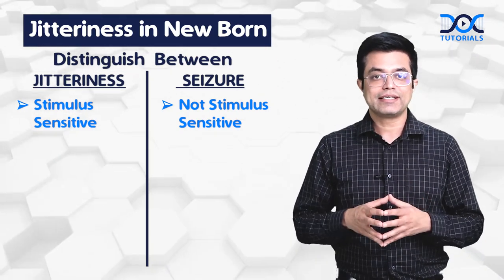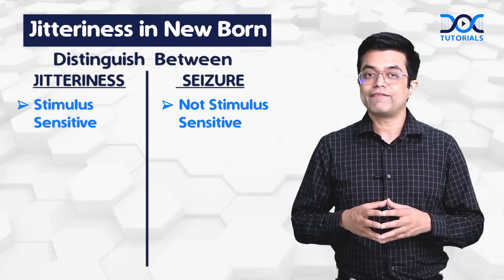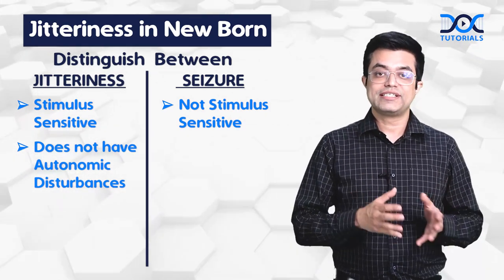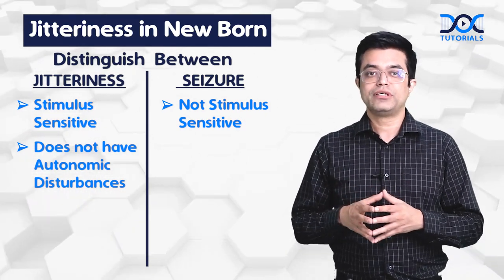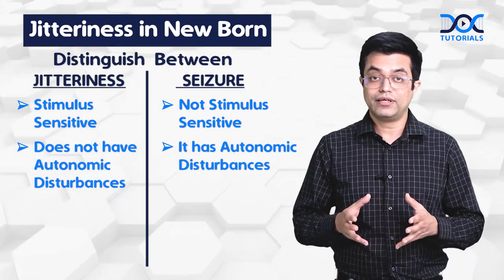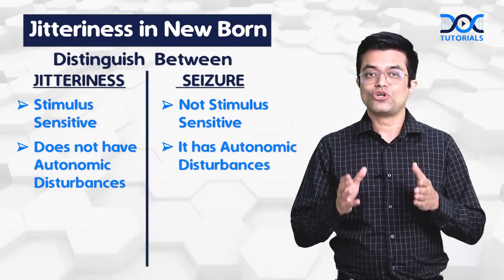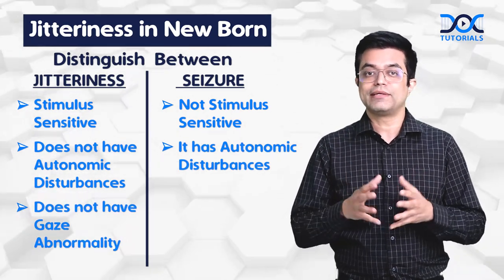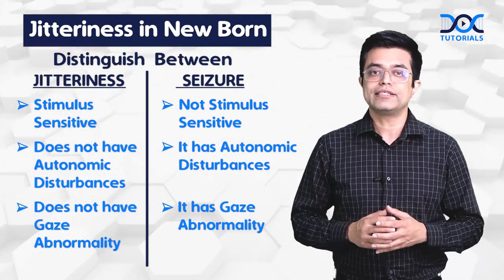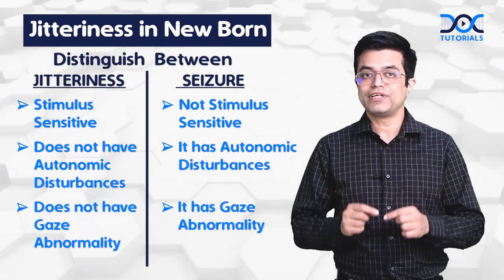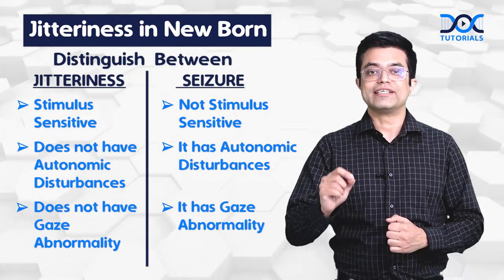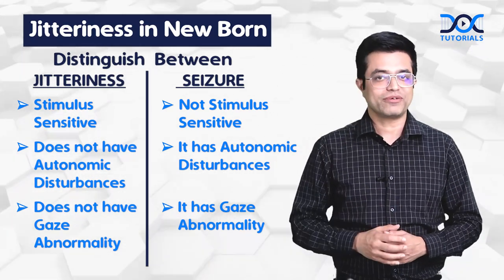Secondly, jitteriness does not have any autonomic disturbances like changes in heart rate or changes in blood pressure, whereas seizures can have those. And thirdly, jitteriness does not have any gaze abnormality while seizures can be associated with a gaze abnormality. So these are the differences and the key points to remember how jitteriness differs from seizures in a newborn.